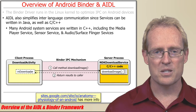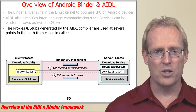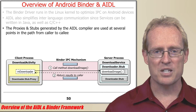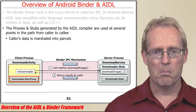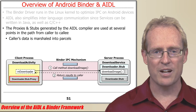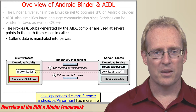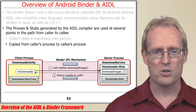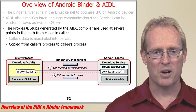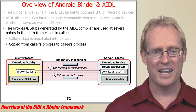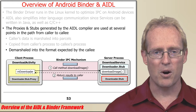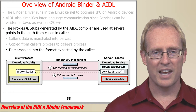The proxies and stubs generated by the AIDL compiler are used at several points in the path from caller to callee and back. The proxies generated by the AIDL compiler marshal caller data into parcels, which are containers for data and object references. The binder framework on the caller's side copies these parcels from the caller's process to the callee's process, where the binder framework on the callee's side uses the stubs generated by the AIDL compiler to demarshal the contents of the parcels into the native representation expected by methods in the callee's objects.